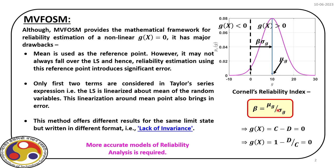The limit state gx equal to 0 has the form c minus d equal to 0, where c represents capacity and d represents demand. So long as the capacity is more than demand, we are in a safe region.